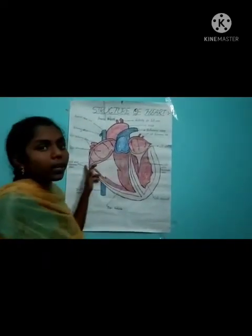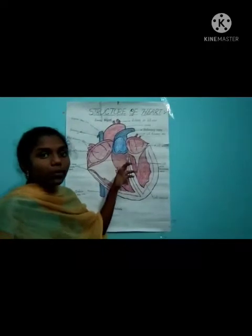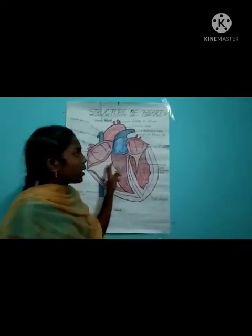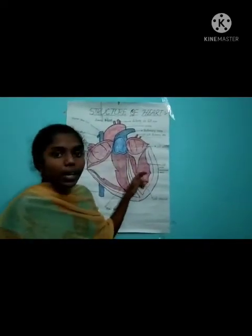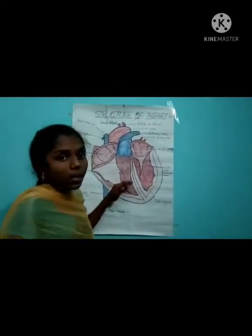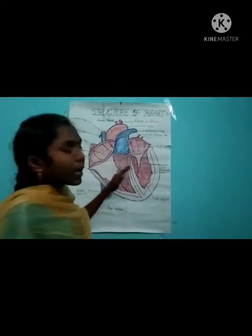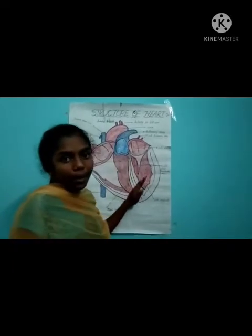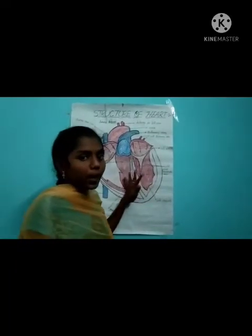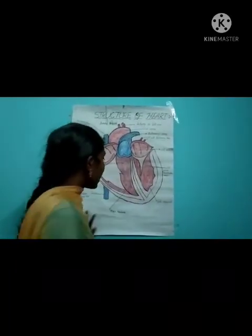It is triangular in outline. The heart is covered by two pericardial membranes.